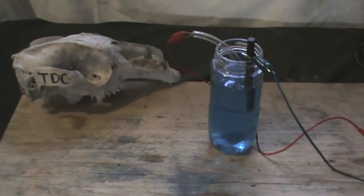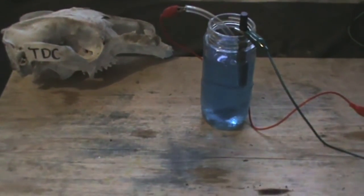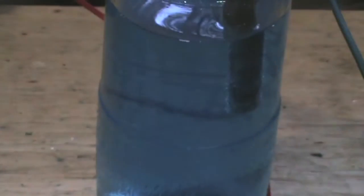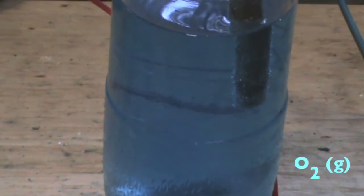After all the necessary connections are made, turn the power supply unit on. As we can see, bubbles are liberating off from the lead dioxide anode. This is oxygen gas.